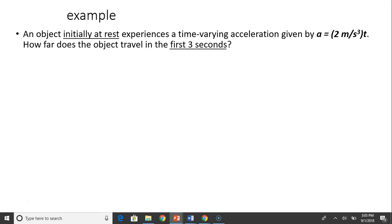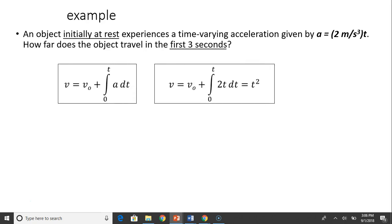Take a look at another example. An object initially at rest experiences a time-varying acceleration a equals 2t. How far does the object travel in the first three seconds? This one did not tell you its initial position, but you don't have to know because this one is asking you the displacement. So here is v equals v naught plus integral of a dt, and v equals v naught. Integral of a equals 2t dt. v naught is 0, so v as a function of t is v equals t².